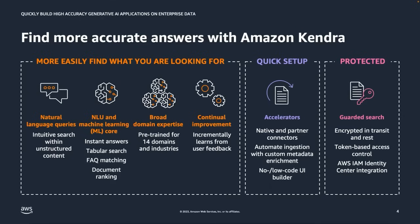Amazon Kendra's machine learning models are pre-trained for 14 different domains and industries including HR, finance, legal, and so on. Amazon Kendra is secure — all data is encrypted in transit and at rest, and it provides token-based access control and access control lists. It is also a fully managed service, so you don't need to manage any clusters, patching, or compute infrastructure.